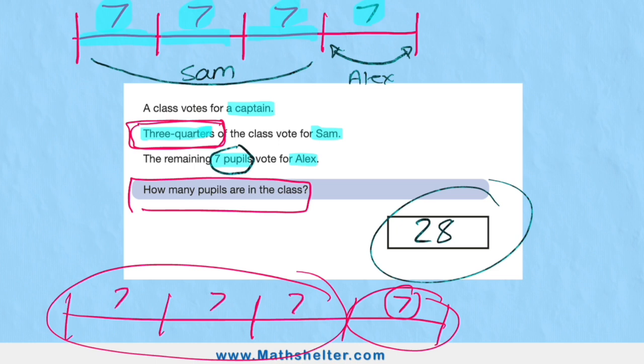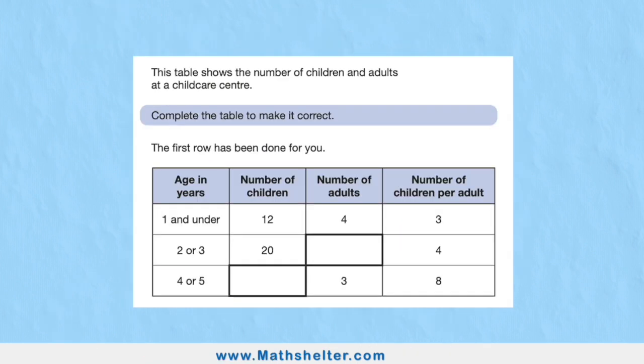Question five: we have a table. Very common—there's always a table in these exams. This table shows the number of children and adults at a childcare center. It says complete the table to make it correct. The first row has been done for you. If we can see the titles of the columns, we have age in years, number of children, number of adults, and number of children per adult.